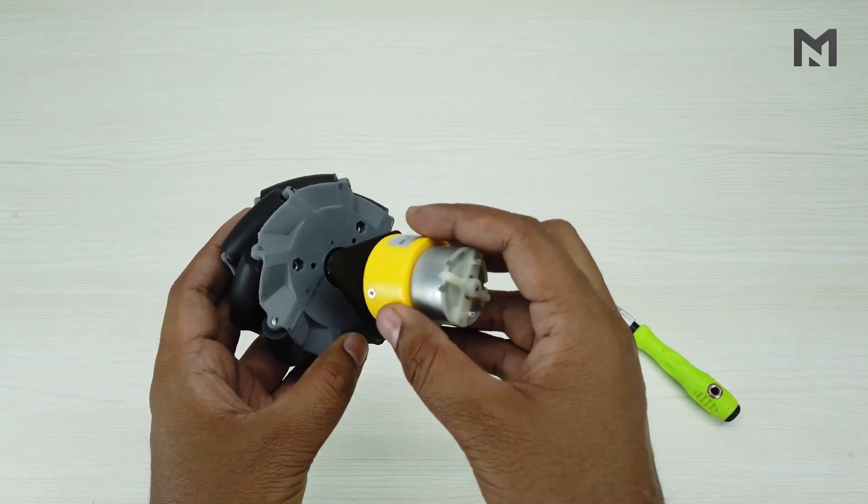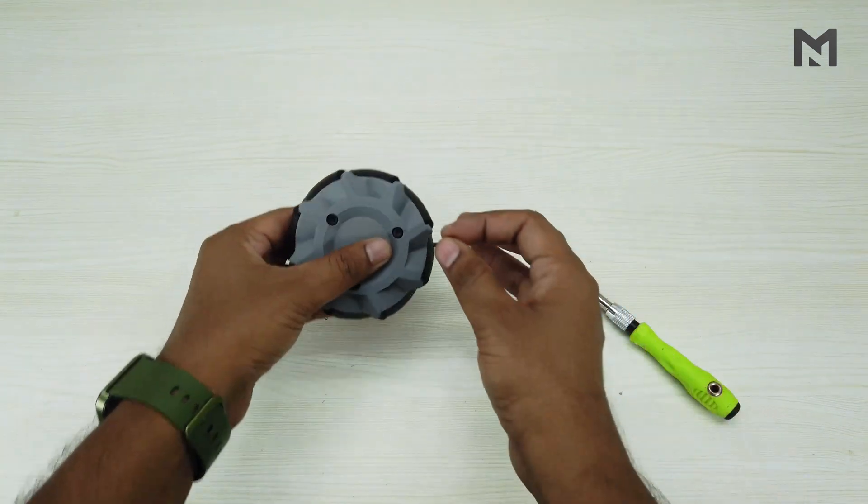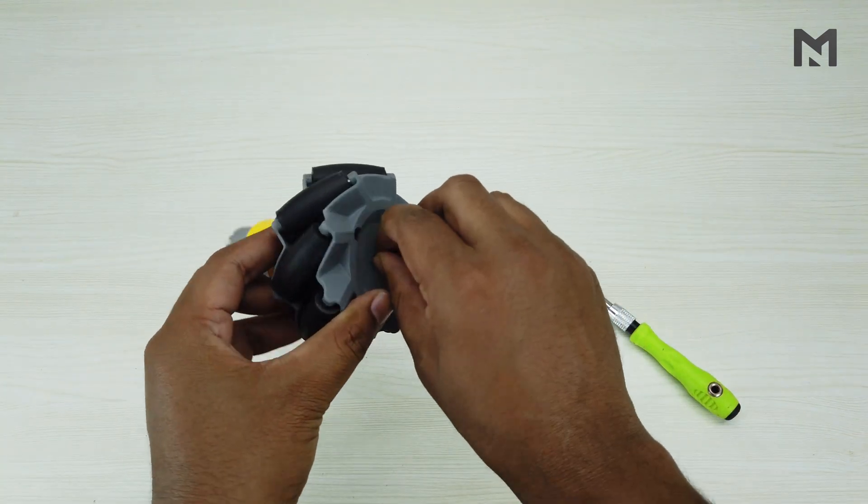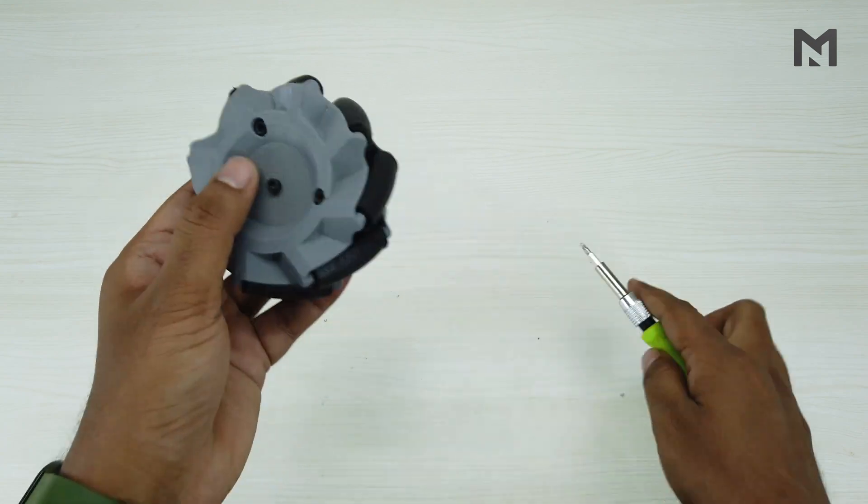Then attach both the parts with the wheel. Use a 10mm length screw to connect them. Now, our complete assembly is ready.